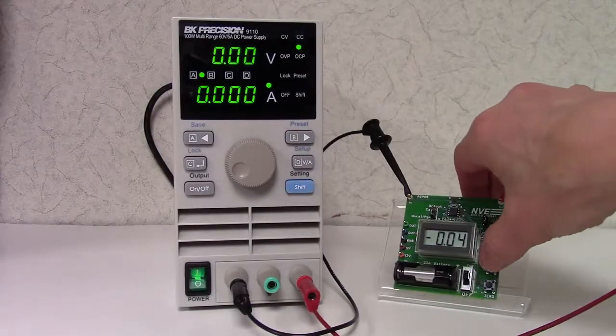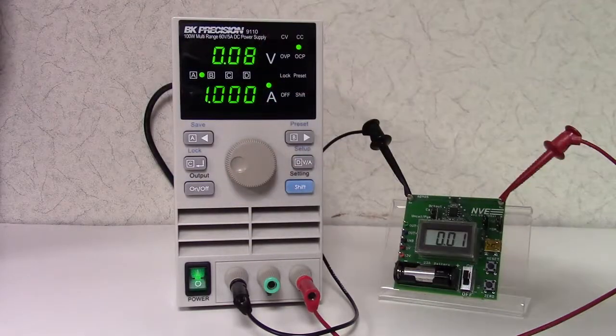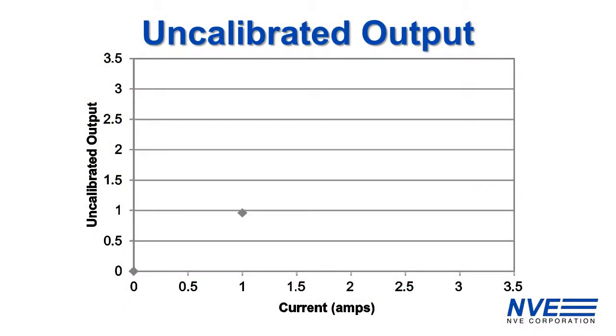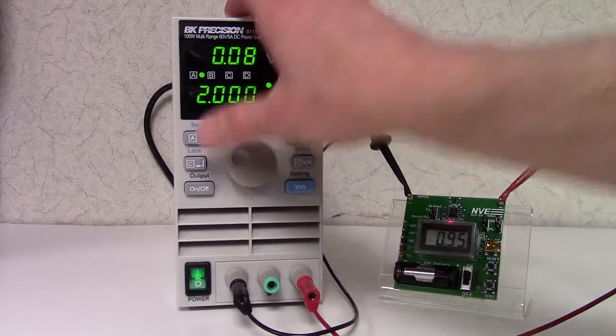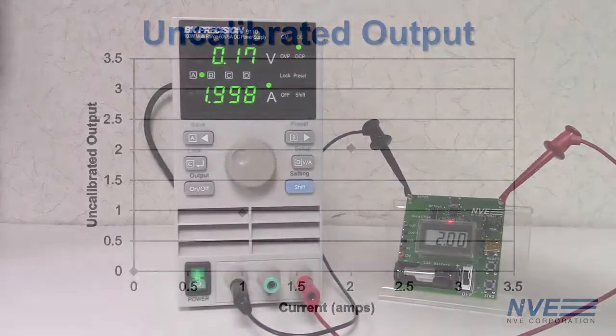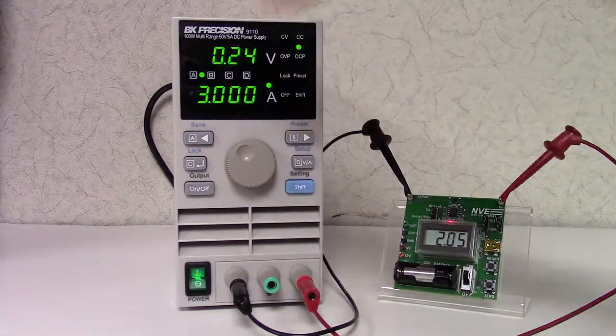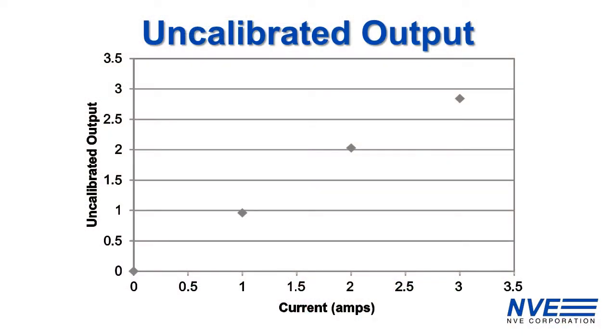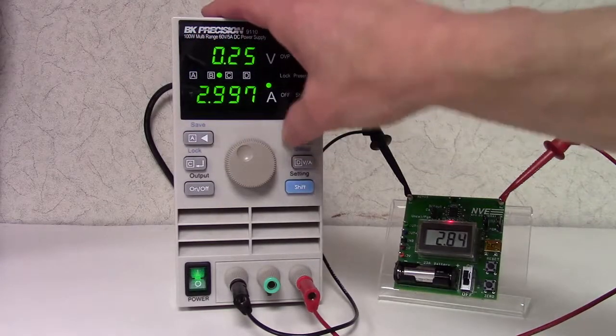Let's look at the uncalibrated output. We check the uncalibrated output at 1 amp, 2 amps, 3 amps, and 3.5 amps.